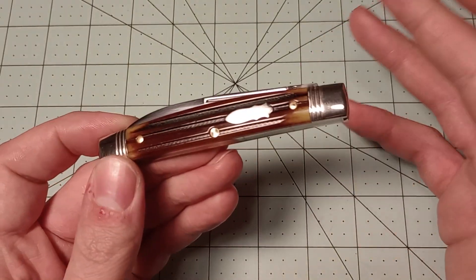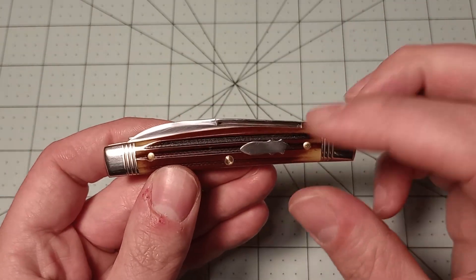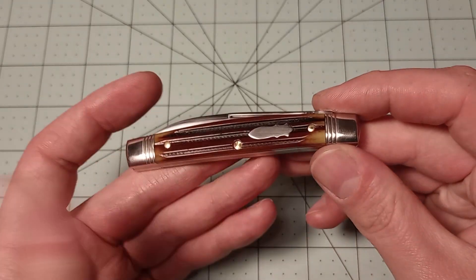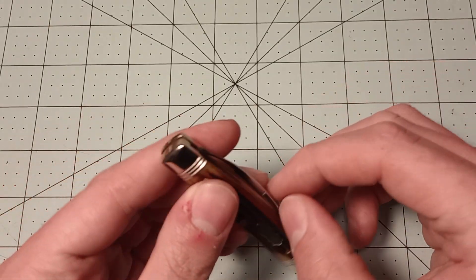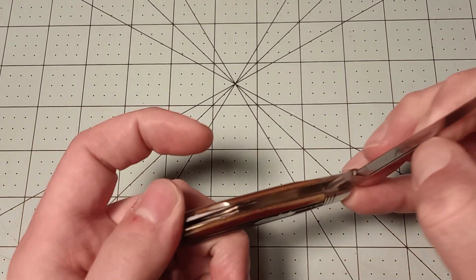Brass pins, brass liners, nickel silver bolsters, nickel silver shield. Typical stuff. Of course this is carbon steel. Since it is a Northfield.